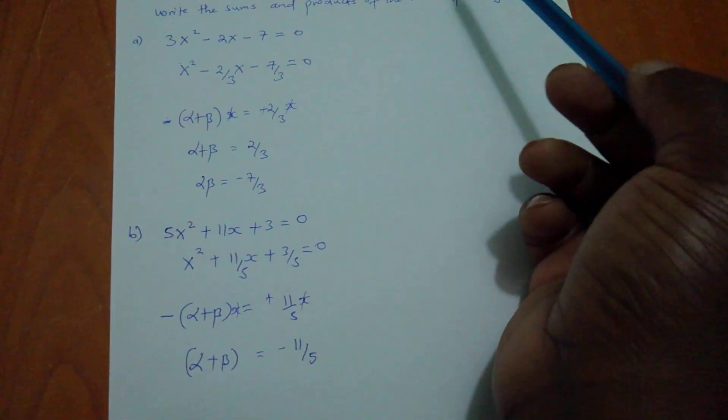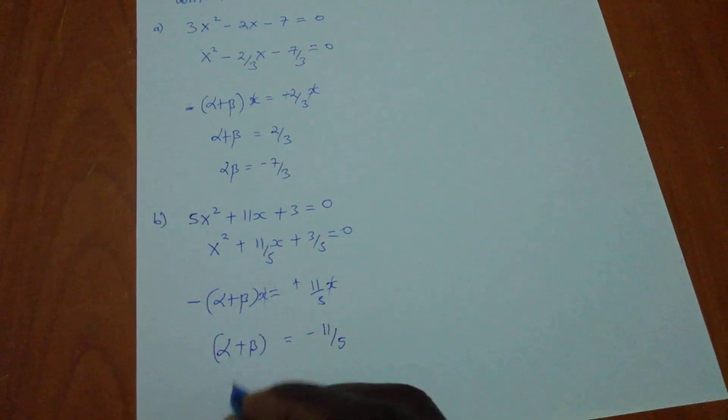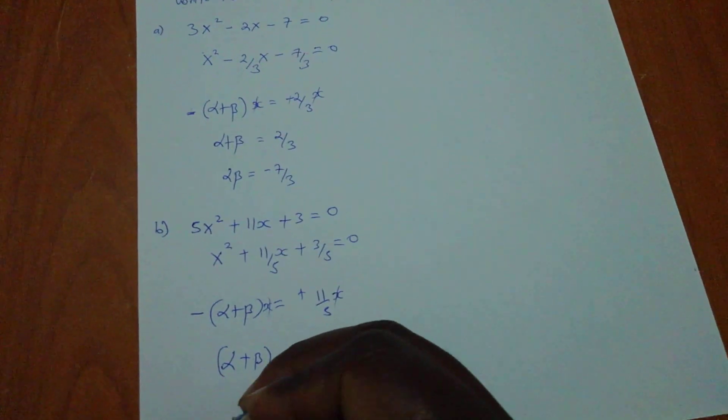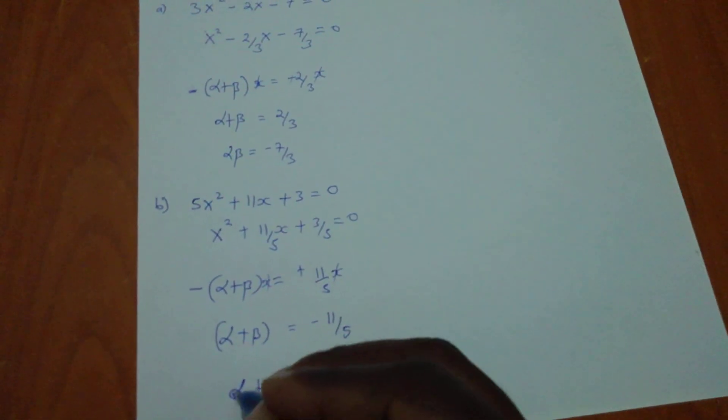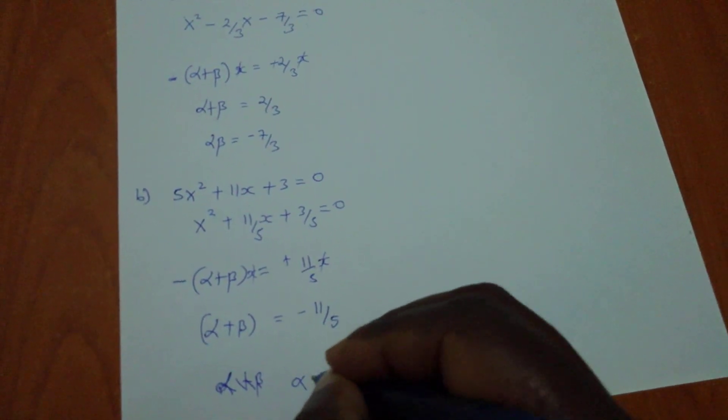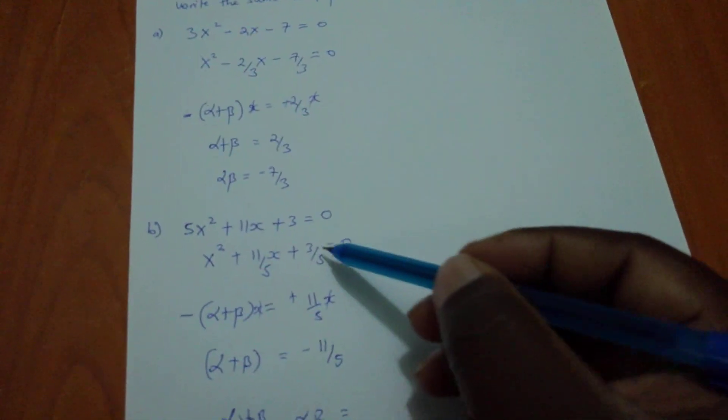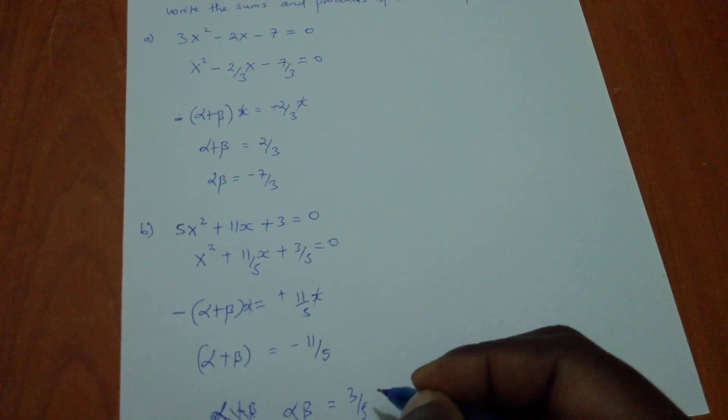They wanted us to find the values of the sum and products. Of course, my product will be - the sum I've already got it. And now the product, alpha beta, this one will be positive 3 over 5.